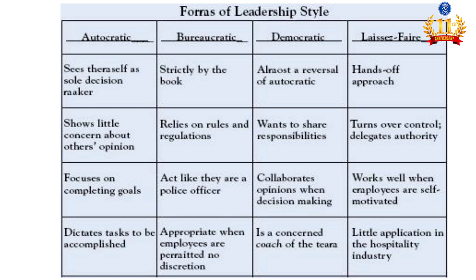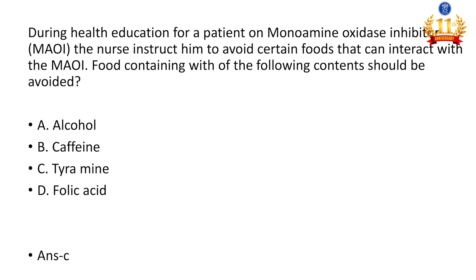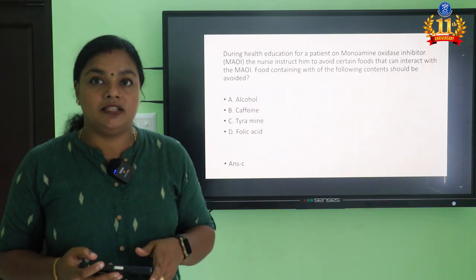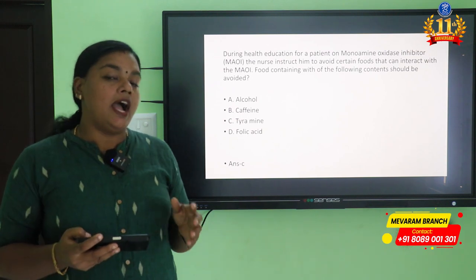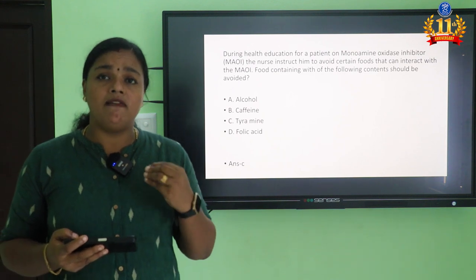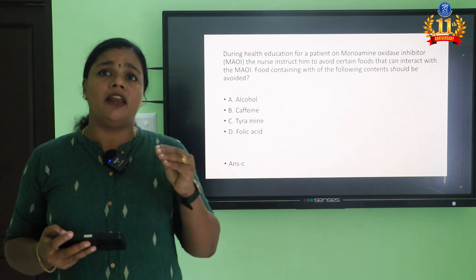Next question: during health education for a patient on monoamine oxidase inhibitors (MAOIs), the nurse instructs him to avoid certain foods. Food containing which substance should be avoided? Options: alcohol, caffeine, tyramine, and folic acid. MAOIs are a main antidepressant drug. Along with MAOIs, we need to avoid tyramine-containing food. Tyramine-containing food causes hypertensive crisis — a hypertensive emergency where BP is systolic more than 180 and diastolic more than 120.